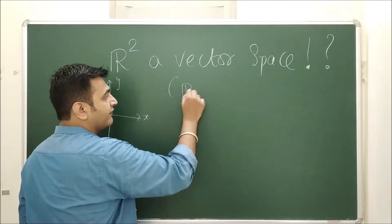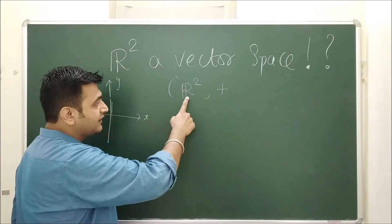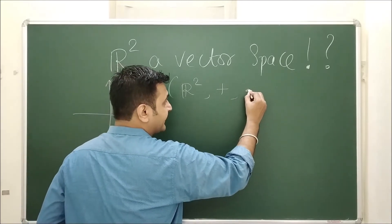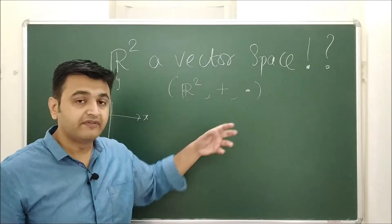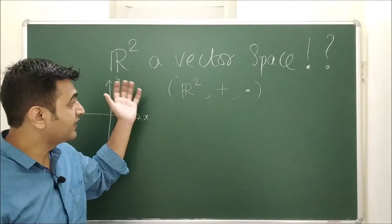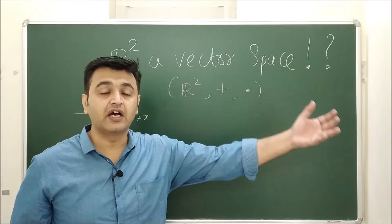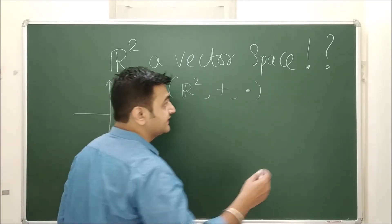You define two operations on that set. One is the vector addition, so for addition you take the elements from R² itself, from the set only. But the second is the scalar multiplication. And to define this operation, we take a scalar or a number from a field. So if someone asks you, is R² a vector space, your first question should be over which field are you asking?